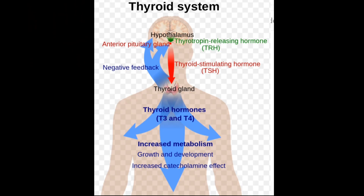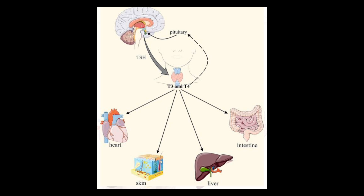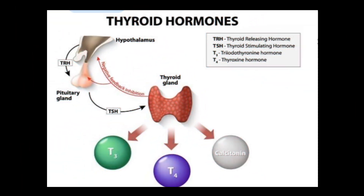The thyroid controls your metabolism with two specific hormones: T4, also called thyroxine, and T3, also known as triiodothyronine. These two hormones are created by the thyroid and tell the body's cells how much energy to use. When your thyroid works properly, it maintains the right amount of hormones to keep your metabolism working at the right rate, creating replacements as hormones are used.